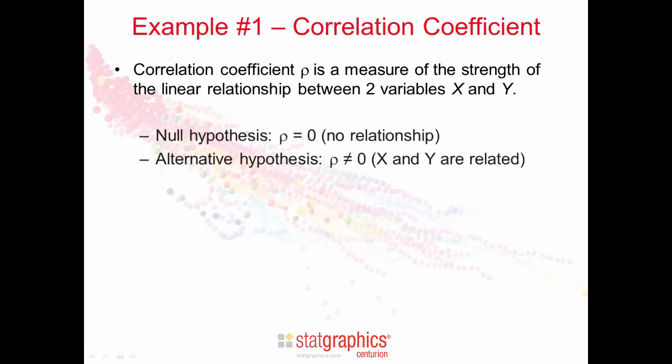A common test performed on the correlation tests the hypothesis that rho is equal to zero, which implies no relationship, versus the alternative hypothesis that rho is not equal to zero, which implies that X and Y have a linear relationship.